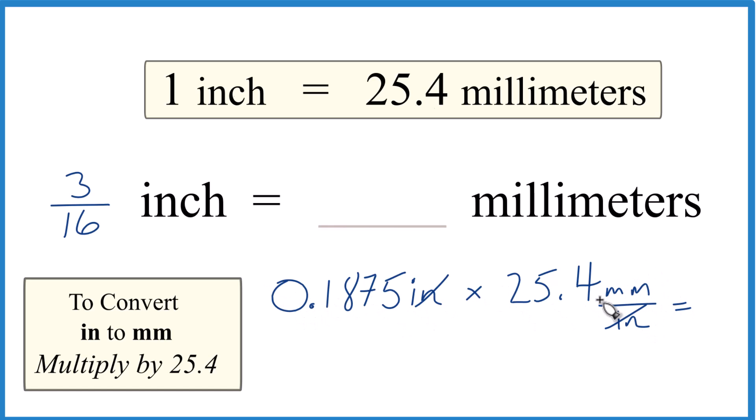So we multiply and we end up with 4.7625 millimeters. I'm going to round it to 4.76 millimeters. And in answer to our question, when we convert 3/16th of an inch to millimeters, we get 4.76 millimeters.